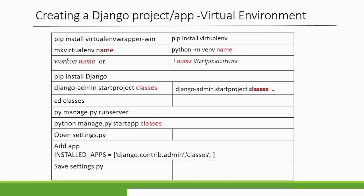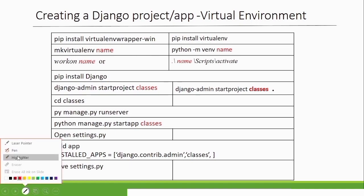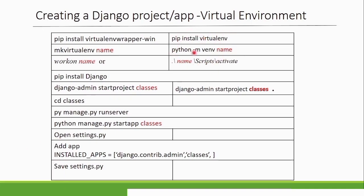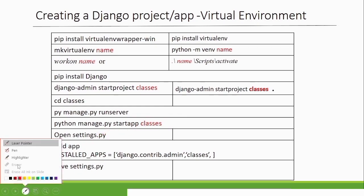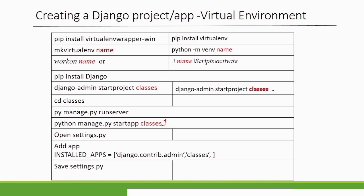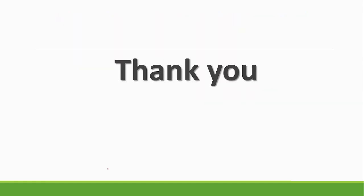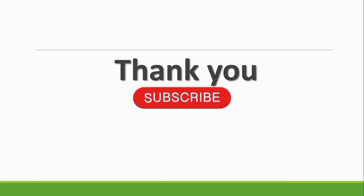Today we've seen how to create applications within a Django project. The steps are: create a virtual environment, activate it, install Django, create a project, run and verify the project, then create your applications. Remember the application name should be different from the project name. Add the app name to settings.py, save the file, and you're good to go. Please like and subscribe so I can bring many more videos.